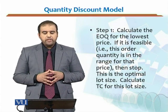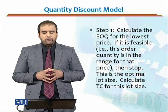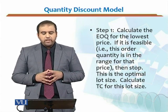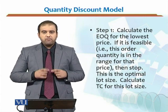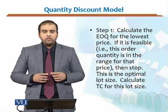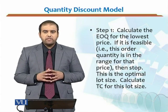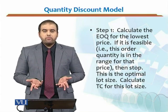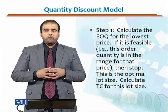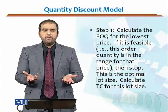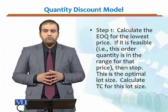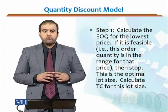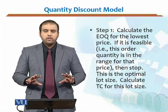Step one: calculate the EOQ for the lowest price. If it is feasible — meaning the EOQ falls within the range for that price — then stop; this is the optimal lot size. Calculate the total cost for this lot size. You start with the lowest price because it is most attractive for the retailer, and at that lower price the quantity demanded is higher, which is also attractive for the manufacturer. From a supply chain perspective, this achieves coordination.